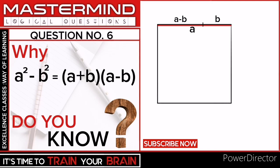Now we draw a square with side length of a. So the area of this square is a².